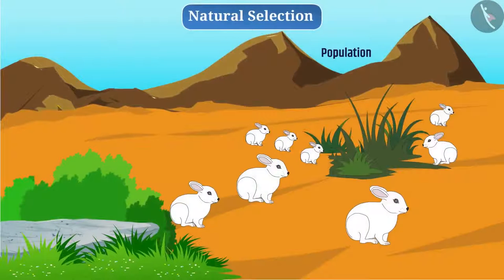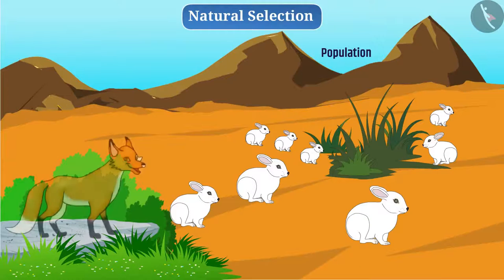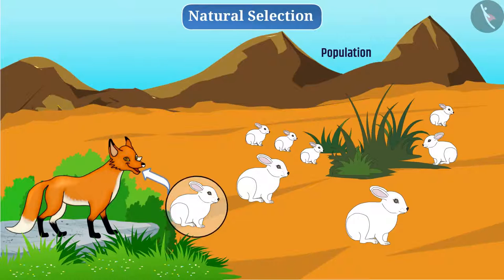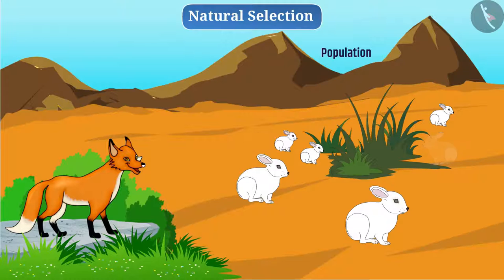There is a population of white rabbits residing on a hill. Sometime after, a fox comes to live on the hill. The fox hunts these rabbits for its survival. Gradually, the number of rabbits on the hill decreases.